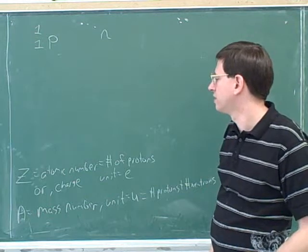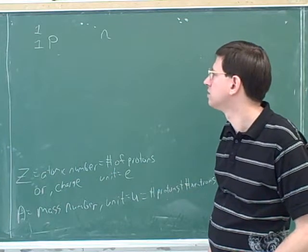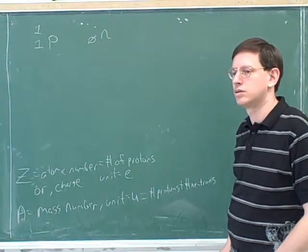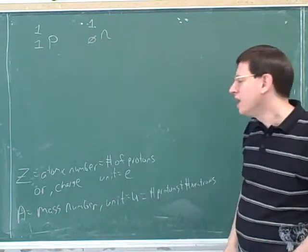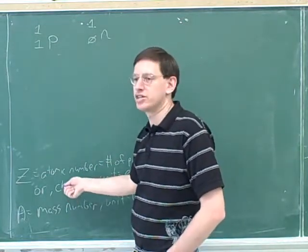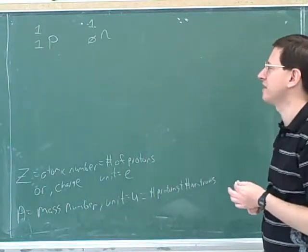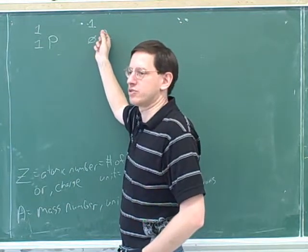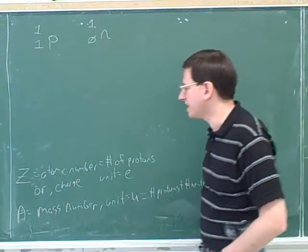How about a neutron? The neutron would have zero for its atomic number and one for its mass number, because it has a mass of one atomic mass unit. Instead of thinking of this as the atomic number, we can use a broader definition and think of this as a measure of charge. A proton has a plus one charge and a neutron has a zero charge. A neutron is written with zero charge and a mass number of one.